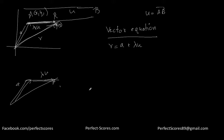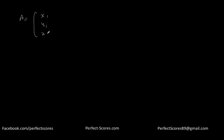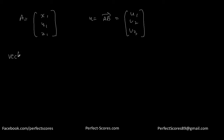Now I'm going to define this in three-dimensional space. In three-dimensional space you have three dimensions: the x coordinate, the y coordinate, and the z coordinate. In that case, vector A is going to be equal to (x1, y1, z1), and vector U, which equals vector AB, is going to be equal to (u1, u2, u3). Your vector equation is still the same: R equals A plus lambda U.